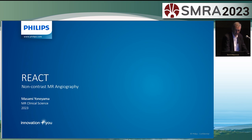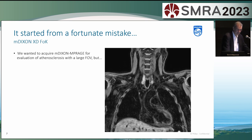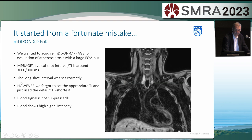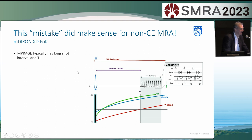I will introduce two of those. The first one is what we call REACT, which is for the body — non-contrast enhanced MRA from the body. And it all started from a mistake. We wanted to do MPRH, which shows the IPH and the plaque pretty well. We expected a certain kind of image. However, due to the mistake — namely setting the inversion time to shortest instead of the proper couple of hundred milliseconds — it turned out that the blood signal was not suppressed. We really had hyper-intensity in the blood signal.